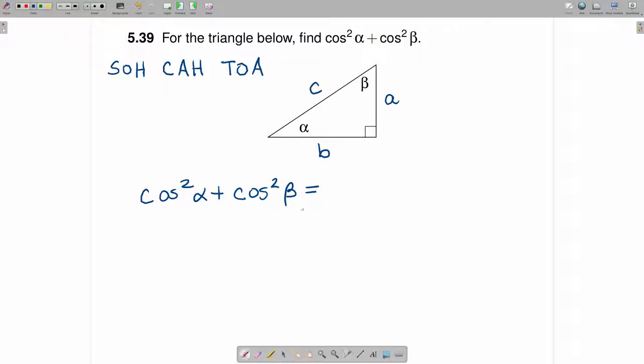we have the cosine of alpha raised to the second power times the cosine of beta raised to the second power. Now, the cosine of alpha is the adjacent divided by the hypotenuse.